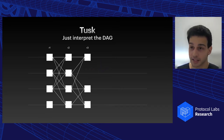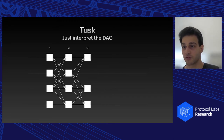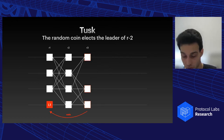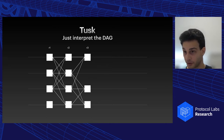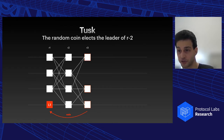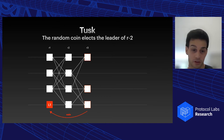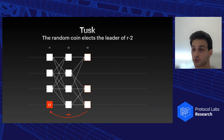Let's assume we have a DAG where round one happened, then round two, and we're about to reach round three, having already seen 2f+1 messages of round three. A small modification: we include a share of a random coin every odd round so that every other round we can open and read a random coin. Once we have 2f+1 certificates for round three — enough shares to compute the coin — we use it to elect the leader from round r minus two, i.e., round one.